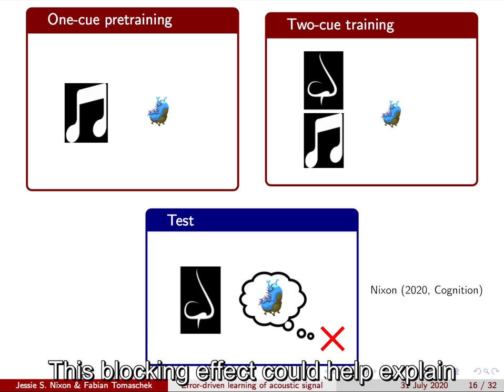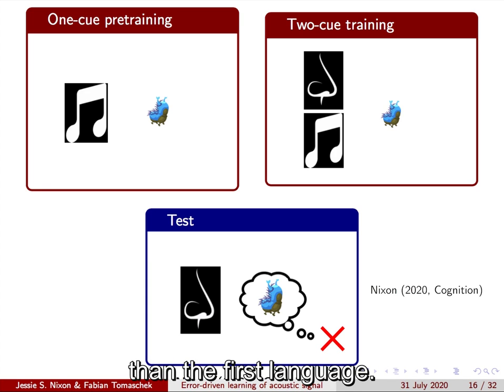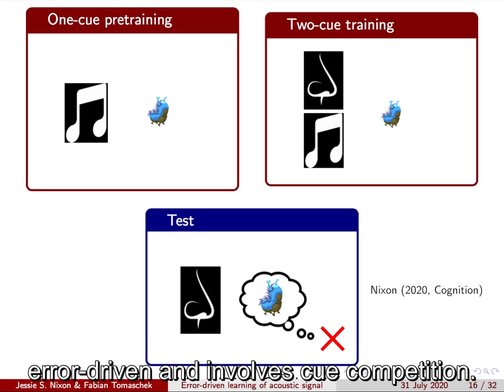Learning this first cue had blocked learning of the second cue. This blocking effect could help explain why learning a second language is more difficult than the first language. It also demonstrates that second language speech acquisition is predictive, error-driven, and involves cue competition.